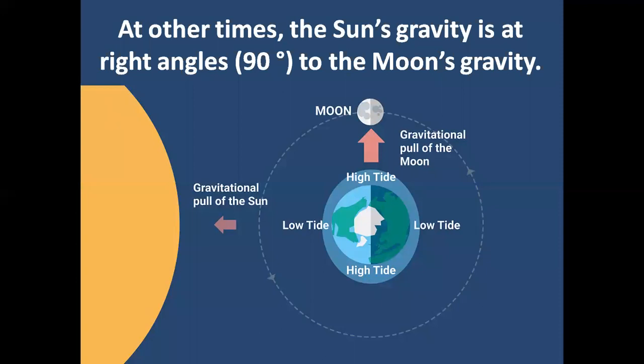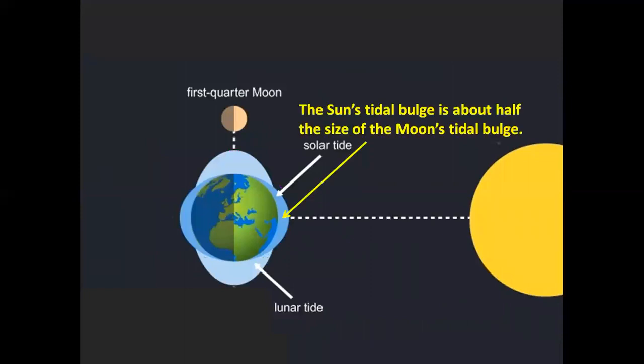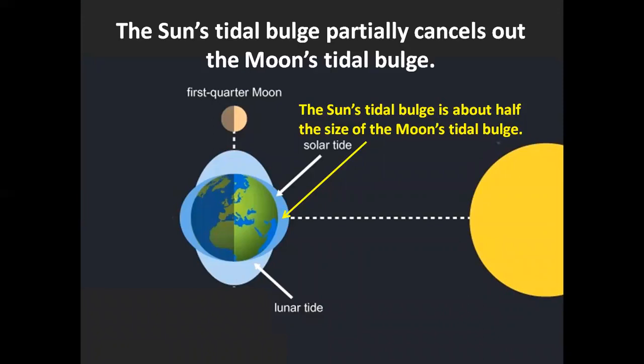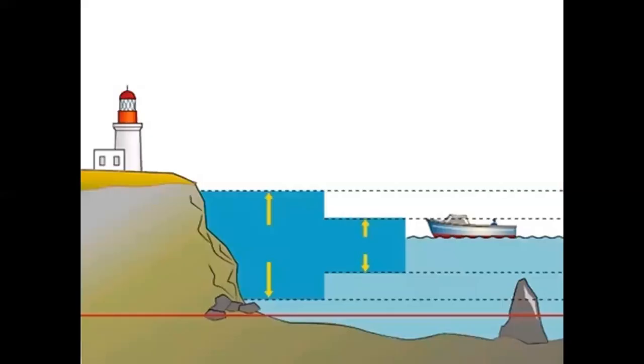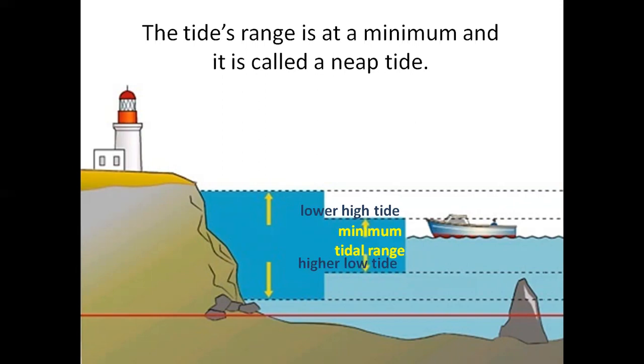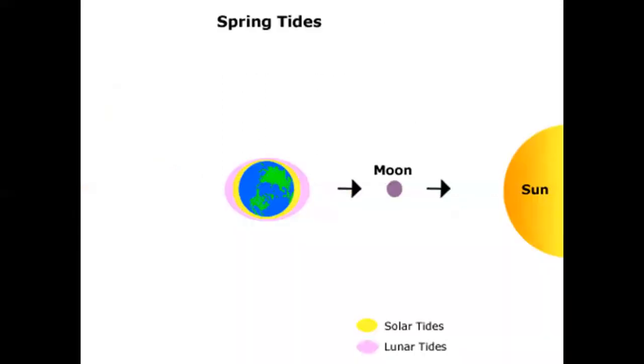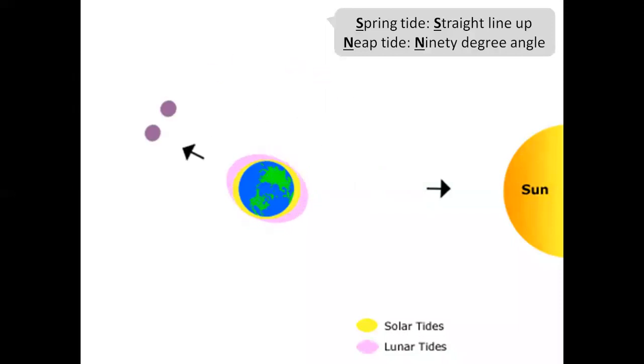At other times, the Sun's gravity is at right angles, 90 degrees, to the Moon's gravity. The Sun's tidal bulge is about half the size of the Moon's tidal bulge. The Sun's tidal bulge partially cancels out the Moon's tidal bulge. As a result, tidal bulges are smaller. This occurs at first quarter Moon and at third quarter Moon. We have a lower high tide and a higher low tide, a minimum tidal range. The tide's range is at a minimum and it is called a neap tide. Spring tide, straight line up. Neap tide, 90 degree angle. 90 is a neap, straight line up, spring. 90 degree is neap, straight line up, spring.